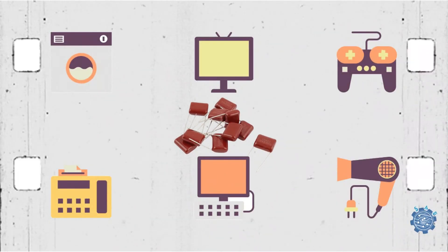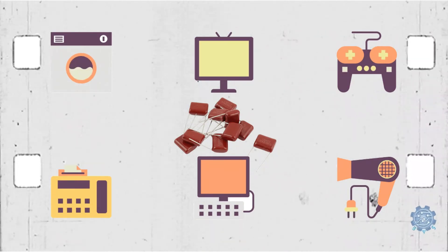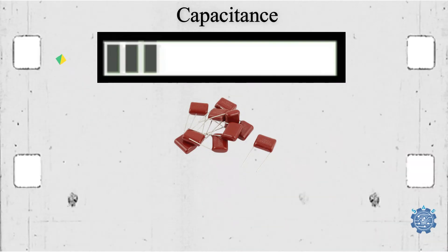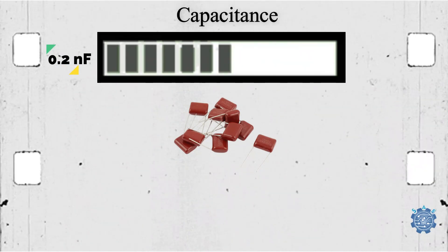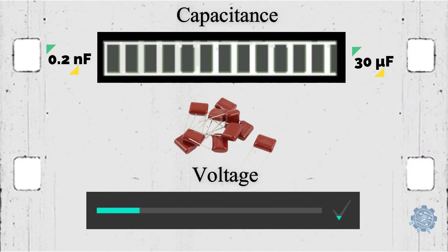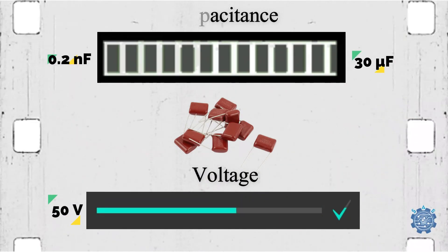They are used in different applications depending on the material used for dielectric. The capacitance range is somewhere between 0.2 nanofarads to 30 microfarads, and the voltage that they withstand is somewhere between 50 volts and 2 kilovolts.